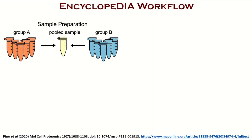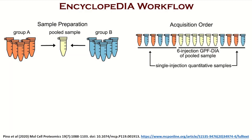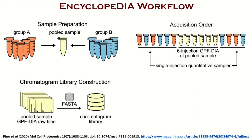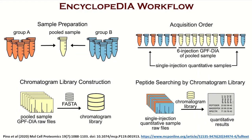Turning our attention to Encyclopedia software. Encyclopedia software was developed in Mike McCoss's lab by Brian Searle, and here is the recommended acquisition strategy for chromatogram library data collection. Experiment groups shown here in orange and blue — this could be control and disease or any other two conditions to compare — are pooled and then run using gas phase fractionated DIA analysis after at least six injections of the same matrix to ensure consistent chromatography. Next, a chromatogram library is generated from the pooled samples and used to interpret quantitative results for each biological replicate.